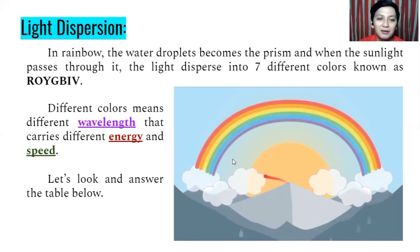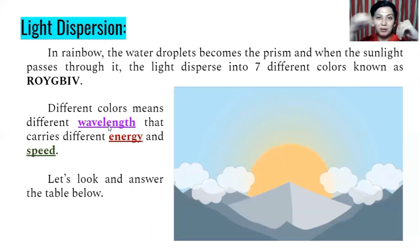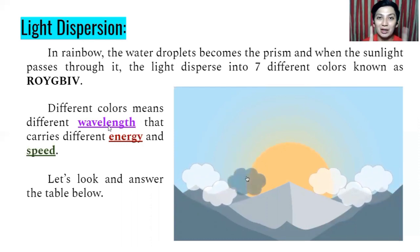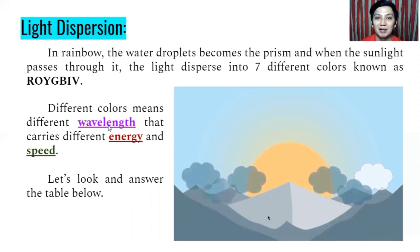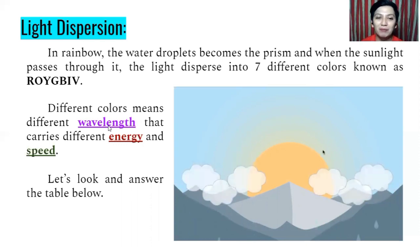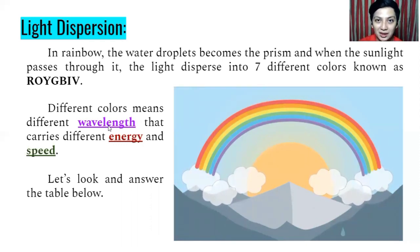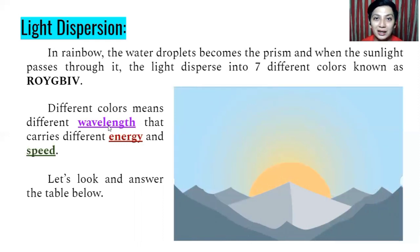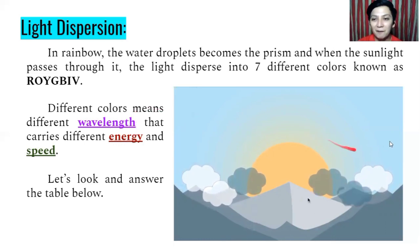Different colors mean different wavelengths. Remember wavelengths from the different parts of a wave? The distance between two waves is the wavelength. Each color carries energy and has speed as well. Different wavelengths have different energy. And because of that, they also have different frequency — meaning, how many waves appear in a second.